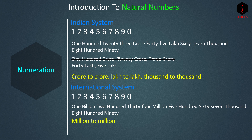To make large numbers easier to read, we use commas. In the Indian system, start from the right and put the first comma after three digits, then put a comma after every two digits. In the International system, start from the right and put a comma after every three digits. Remember: one million equals ten lakh.